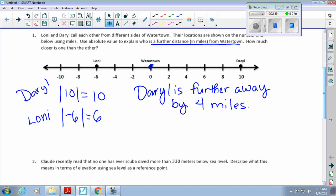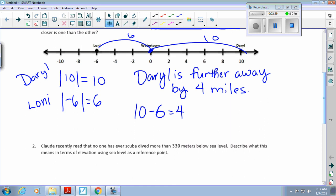I wanted to make sure that you have this written down: 10 minus 6 equals 4. As silly as that seems to write down, that's showing your work. Now, how far apart is Lonnie from Daryl total? 16. Lonnie is 6 away here, and this distance is 10, so 10 plus 6 is a total distance of 16. But this question is asking how much closer one is to Watertown than the other.